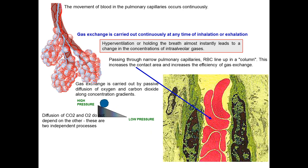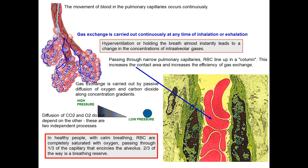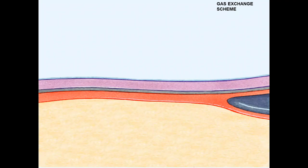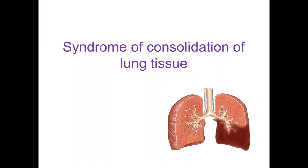Gas exchange is carried out by passive diffusion of oxygen and carbon dioxide along the concentration gradient. Diffusion of CO2 and O2 are independent processes. In healthy people with calm breathing, red blood cells are completely saturated with oxygen after passing through only one third of the capillary that encircles the alveolus. Here is a scheme of gas exchange showing the concentration gradient. Now let's start discussing the syndrome of consolidation.